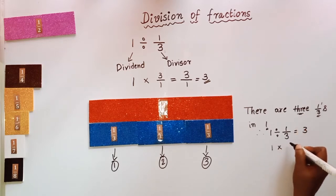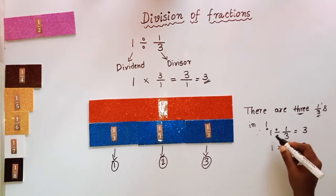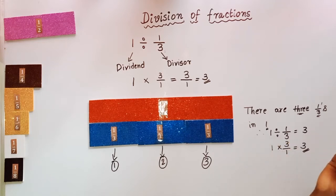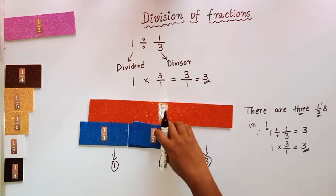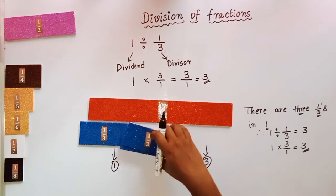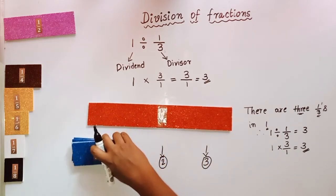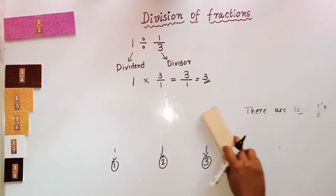This can be written as 1 × 3/1, that is 3. So 1 divided by 1/3 is equal to 1 × 3/1, that is 3. This is how it practically looks. There are 3 one-thirds in 1, so 1 divided by 1/3 is equal to 3.